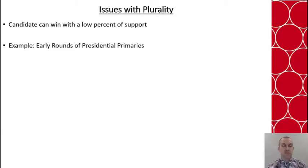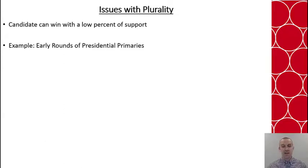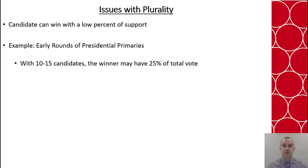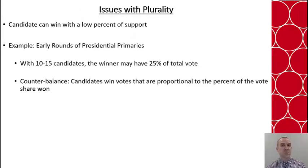Consider what often happens in early rounds of presidential primaries. At that point there could be 10-15 candidates running and the winner often only gets about 25% of the total vote. So the question is, does that really support the notion of who should win an election? One way it's counterbalanced is by giving proportional votes to the percent of the total vote won — that's why you'll see delegates given to each candidate in these primaries.